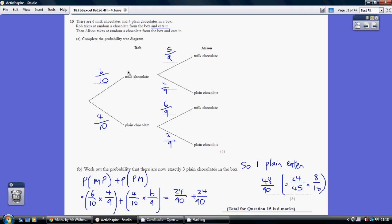So that is of interest to us. A milk and then a plain. A milk, then a plain. 6 over 10 and then 4 over 9. So you multiply those together.